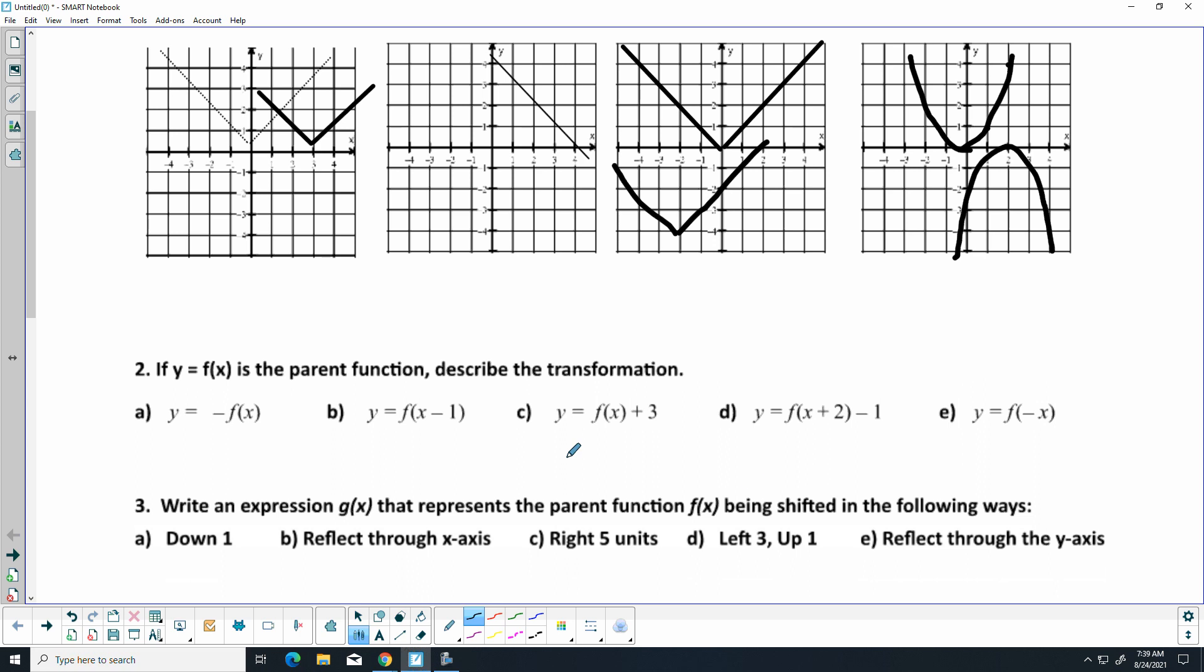All right, so let's go ahead and describe the transformation. So this one is going to be a reflection over the X. B is going to be, because it's paired with the X, it's going to be a shift to the right one unit.